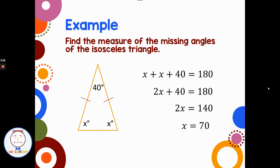So if x is 70 degrees, each of those missing angles are 70 degrees. And I can double check this real quick in my head: 70 plus 70 is 140, plus 40 is 180. So the interior angles of the triangle add up to 180 degrees.